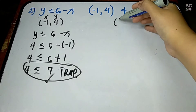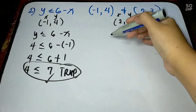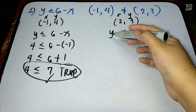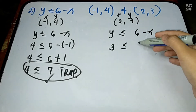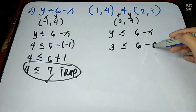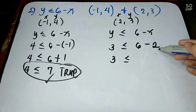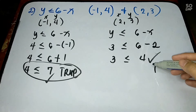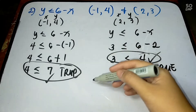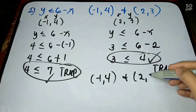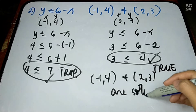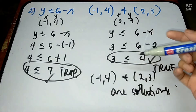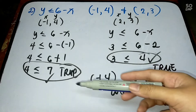Next, let us have (2, 3). This is your x and y. The equation is y less than or equal to 6 minus x. Change y into 3, then less than or equal to 6 minus 2. The answer is 4, so 3 less than or equal to 4. That is true. Therefore, both (-1, 4) and (2, 3) are solutions. It's that simple — you just substitute and analyze whether your final answer is true or false.